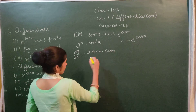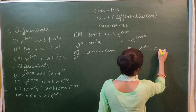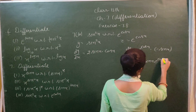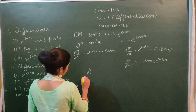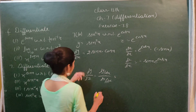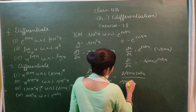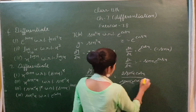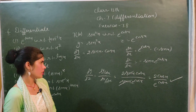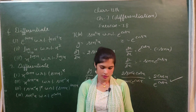Differentiating y = sin²x: dy/dx = 2 sin x cos x. Differentiating z = e^(cos x): dz/dx = e^(cos x) times (−sin x) = −sin x e^(cos x). Therefore dy/dz = (2 sin x cos x) divided by (−sin x e^(cos x)) = −2 cos x / e^(cos x). This is our final answer.